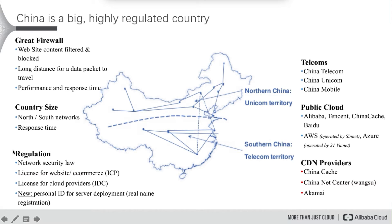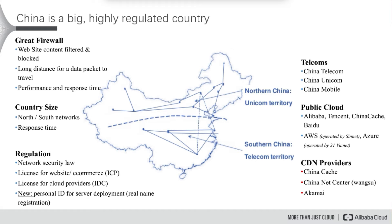There are different telecom operators dominating two different parts of China. Regarding regulation, in China there's the network security law that requires you to apply for ICP. There are also laws for cloud service providers, and if you want to use cloud resources inside China — like Alibaba Cloud's seven regions inside China — you must complete real name verification or real name registration. Those are the regulations you'll face if you want to open a business or provide a service inside China.